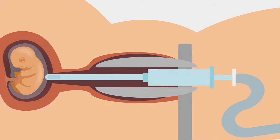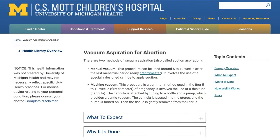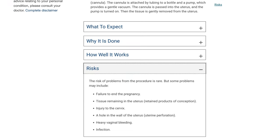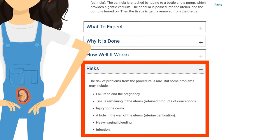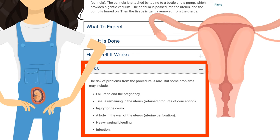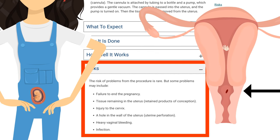According to the C.S. Mott Children's Hospital, vacuum manual abortions have certain risks. Their website states some problems may include failure to end the pregnancy, tissue remaining in the uterus, injury to the cervix, a hole in the wall of the uterus, heavy vaginal bleeding, and infection.